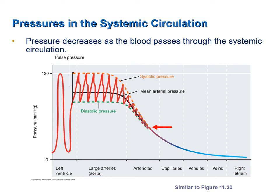As arteries continually branch into greater and greater numbers of arteries, surface area increases. Pressure, by definition, is the amount of force exerted per unit of area. So as the surface area increases, there is less and less force exerted per unit of area, and therefore blood pressure declines. Notice particularly that pressure is extremely low in the veins, and there is not much of a pressure gradient to move blood through the veins back to the heart. That is why having valves, muscular pumps, and respiratory pumps to move blood through the veins back to the heart are so important.